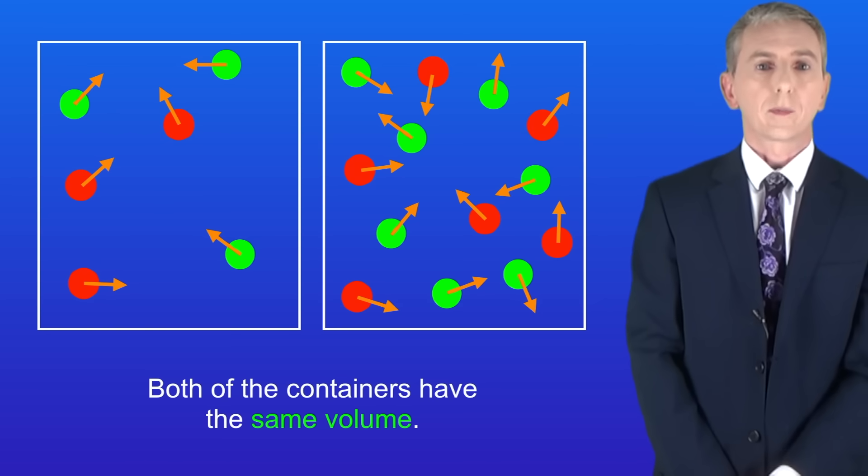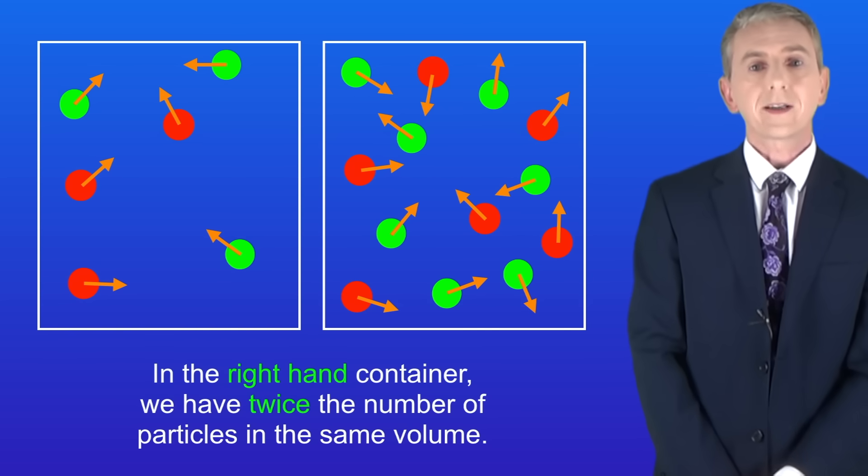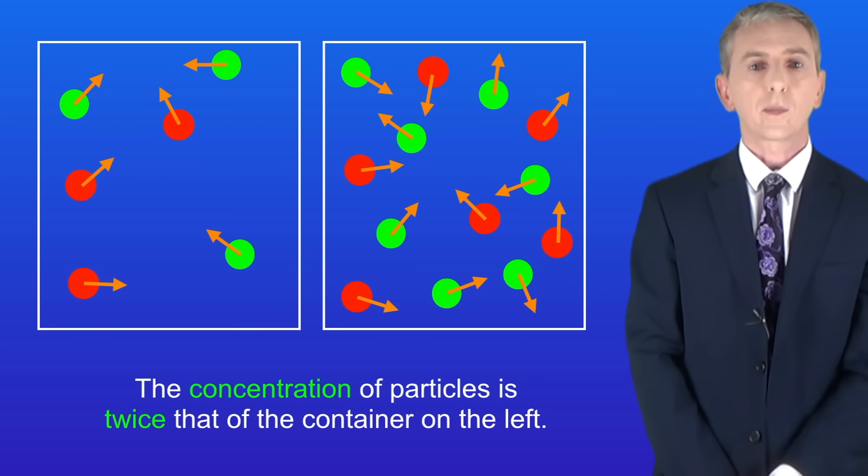Remember that the rate of reaction depends on the number of successful collisions per second. In the right-hand container we've got twice the number of particles in the same volume. In other words, the concentration of particles is twice that of the container on the left.